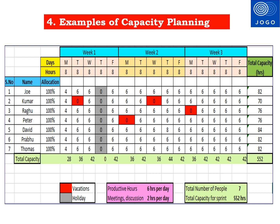Vacations taken by team members are highlighted in red. A total of 4 vacation days are planned by the team in this example, with 0 hours considered for those days. The first Thursday is a holiday for all team members, shown with grey highlights in the first week, with 0 work hours for that day. Out of 8 hours per day, 6 hours are considered for actual work and 2 hours are planned for meetings and discussions. On the first day of the sprint, the team spends 4 hours for sprint planning, so capacity is 4 hours per person that day.